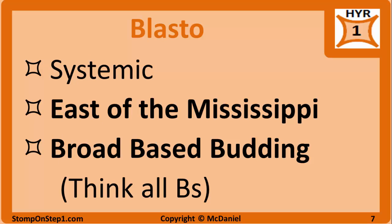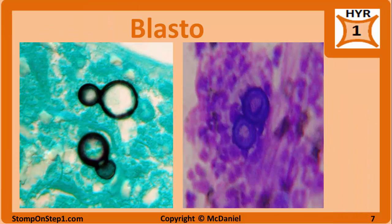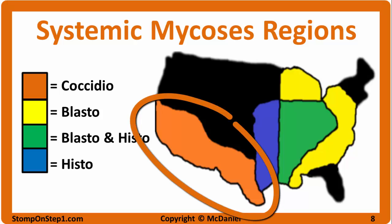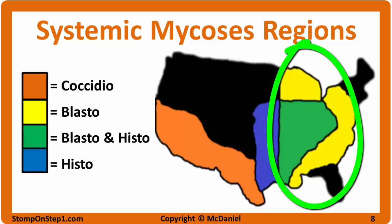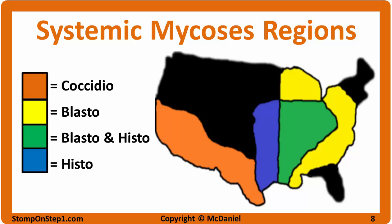Blastomycosis is also a systemic mycosis. It is found east of the Mississippi River and is often associated with exposure to bodies of water like ponds or riverbanks. Histologically it appears as a large yeast with broad-based budding, which you can remember with the mnemonic: all Bs for blastomycosis — broad, based, and budding. Here is a map showing roughly where you can get the different systemic infections in the United States: coccidio in the southwest, blasto in the eastern part of the country from the Mississippi River to the coast, and histo in the middle around the Mississippi and Ohio rivers. Note that there is an overlap between histoplasmosis and blastomycosis.